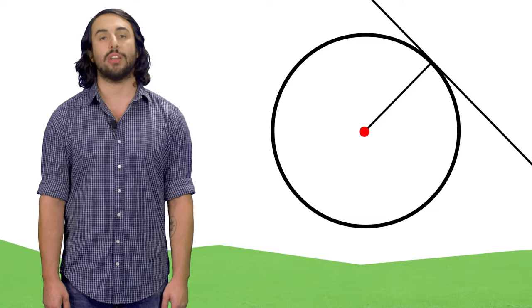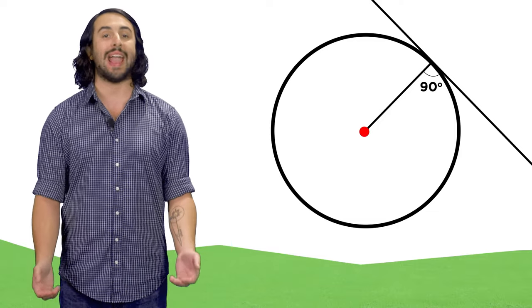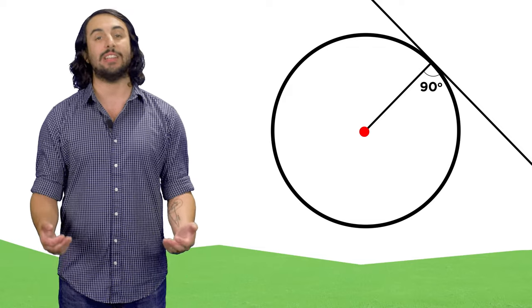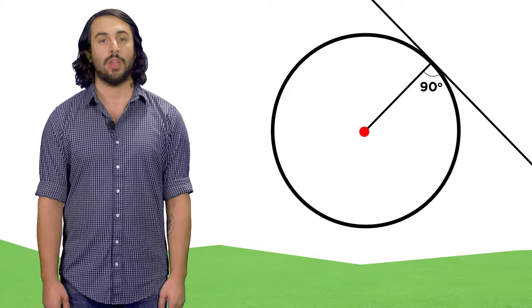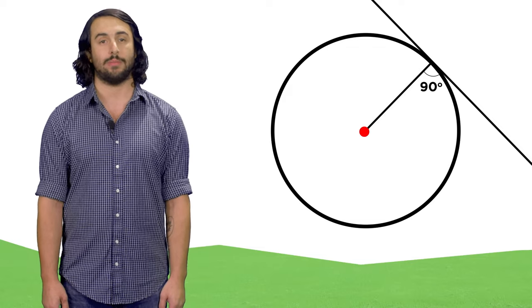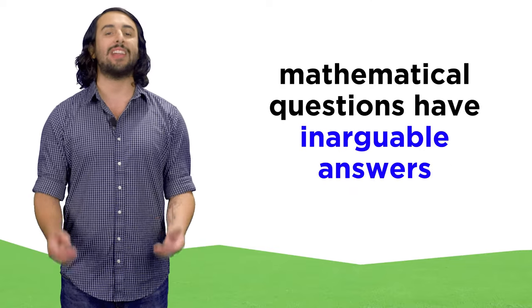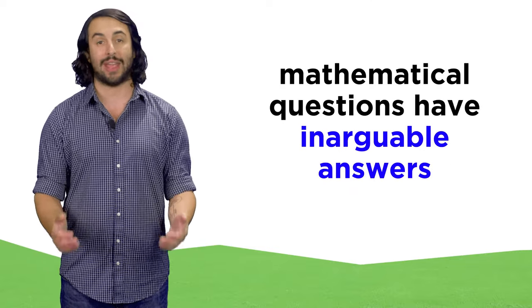However, if I draw a circle and try to determine the angle between a radius and a tangent line, I will either get 90 degrees, or I will be wrong. There are no two ways about it. Every mathematical question like this one has a completely inarguable answer.